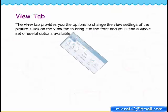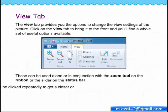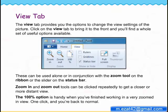The view tab provides you the options to change the view settings of the picture. Click on the view tab to bring it to the front and you'll find a whole set of useful options available. These can be used alone or in conjunction with the zoom tool on the ribbon or the slider on the status bar. Zoom in and zoom out tools can be clicked repeatedly to get a closer or more distant view. The 100% option is handy when you've finished working in a very zoomed-in view — one click and you're back to normal.